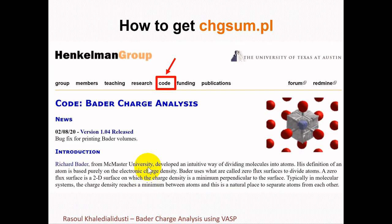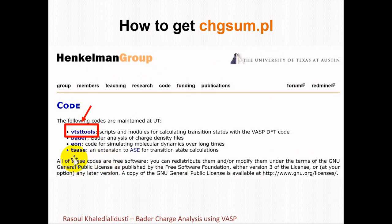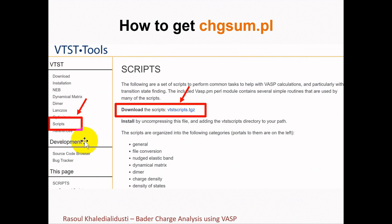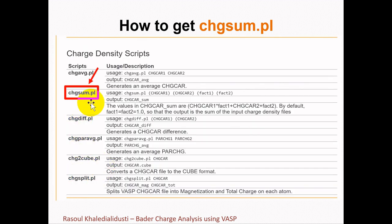To get the chgsum.pl script, go to the Henkelman group web page and click on the Code section. Then go to the VTST Tools section to get the chgsum.pl script. After clicking VTST Tools, you will go to the next page, and under Scripts you can download all the provided scripts. You need only chgsum.pl — after downloading the zip file you can extract this script.